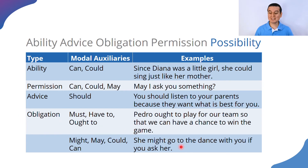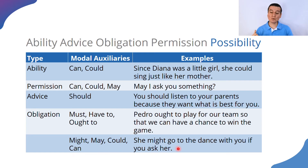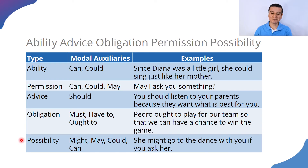With that, we have the last one already solved. The example is: 'She might go to the dance with you if you ask her.' She might go, she may go, she could go, she can go. With that example we are expressing possibility. So that completes the chart. I hope that with this you have reflected on the use of modal auxiliaries.